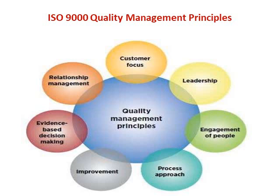The seventh and last principle is relationship management. It identifies and selects suppliers to manage cost, optimizes resources and creates value, establishes relationships considering both short and long terms, shares expertise, resources, information and plans with partners, collaborates on improvement and development activities, and recognizes supplier successes. These are the seven ISO 9000 quality management principles.